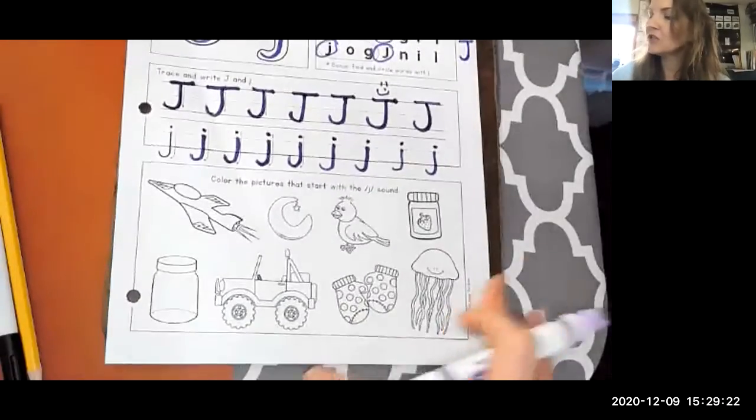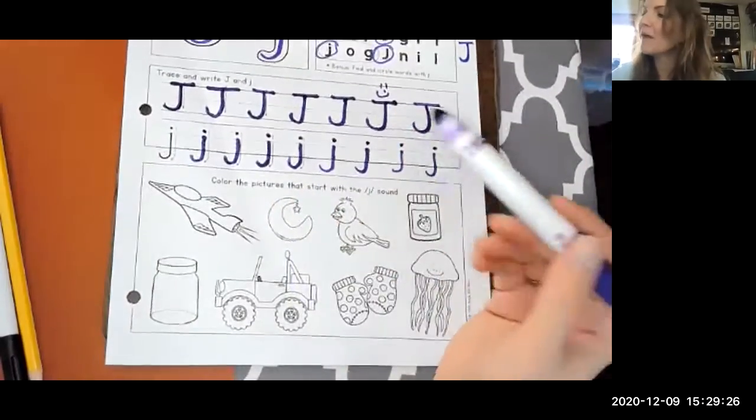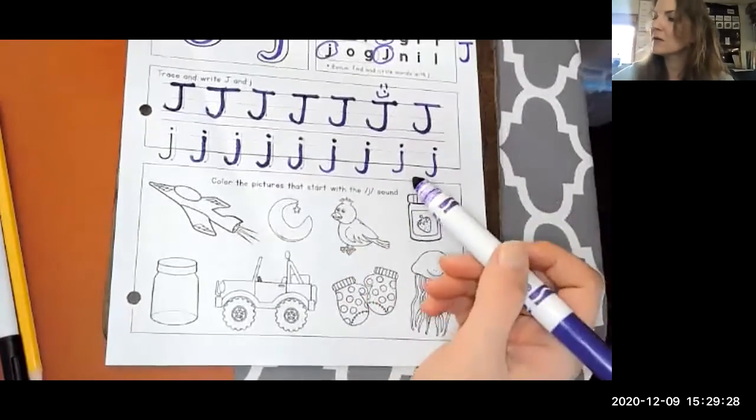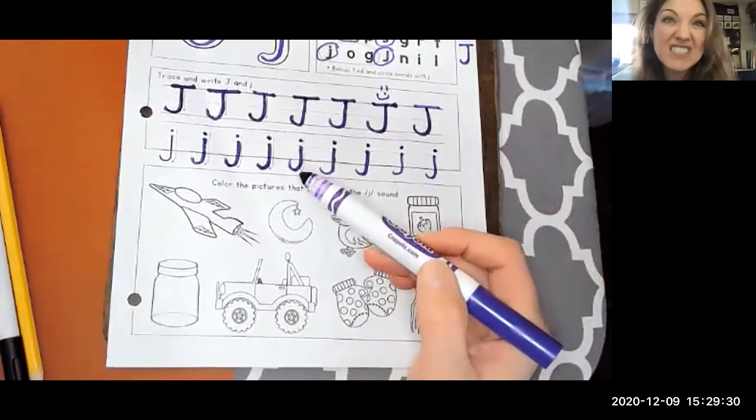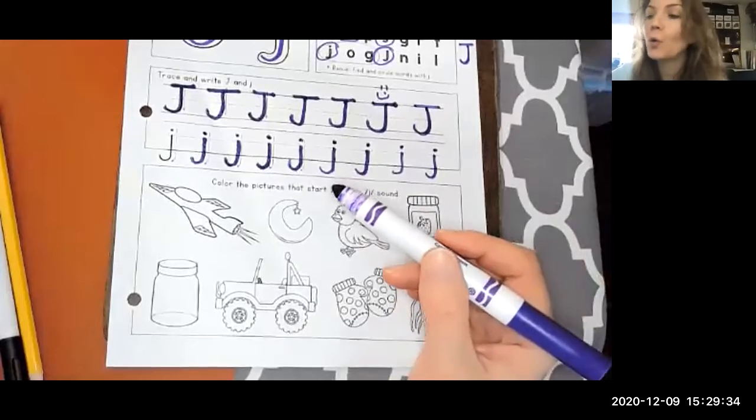Now we're going to color the pictures. Again, if you need to come back for that, that's okay. No worries. But for everybody, color the pictures that start with J. And once again, I'm just going to circle the pictures because I'm going to let you color it on your own time.